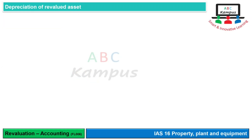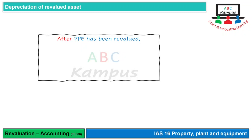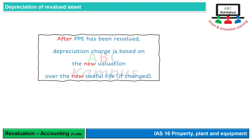Depreciation of revalued asset का rule: जब भी property plant equipment को revalue करेंगे, उसके बाद जो depreciation charge होगी वो new valuation पर होगी और new useful life पर होगी। अगर revaluation हुई है और useful life भी change हो गई है - क्योंकि revaluation के साथ residual value और useful life की review होती है - तो new useful life और new residual value के मुताबिक depreciation charge होगी।